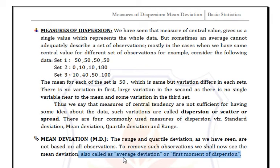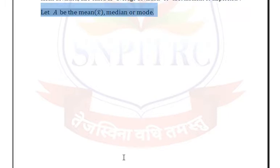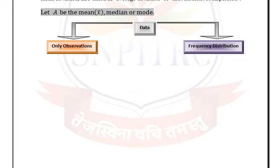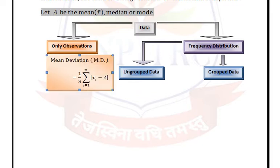There are four commonly used measures of dispersion: standard deviation, mean deviation, quartile deviation, and range. Here we discuss mean deviation, also called average deviation or the first moment of dispersion. We consider mean, median, or mode as capital A, and we have two types of data: only observations and frequency distribution. In frequency distribution we have ungrouped data and grouped data.